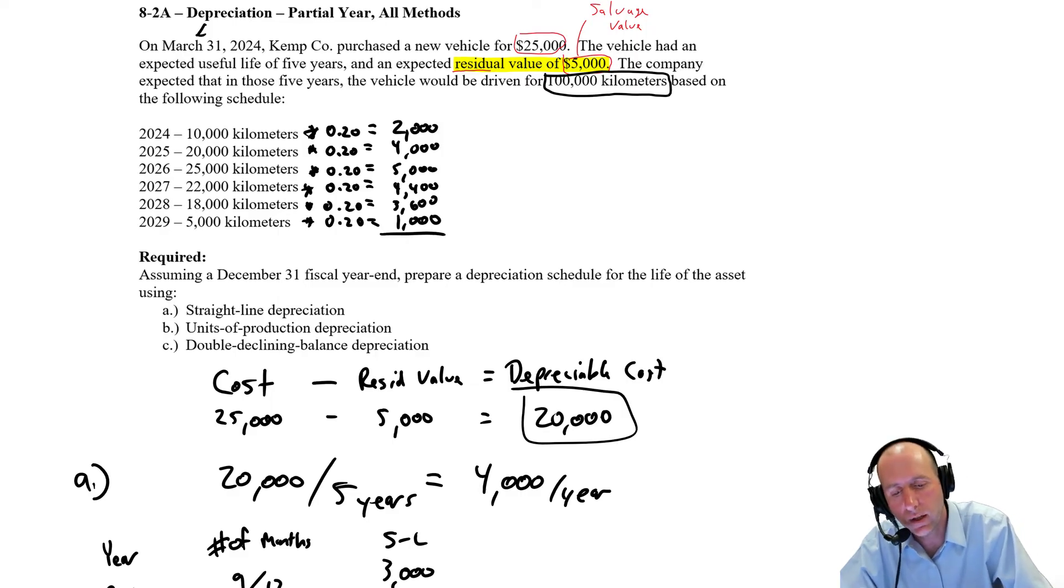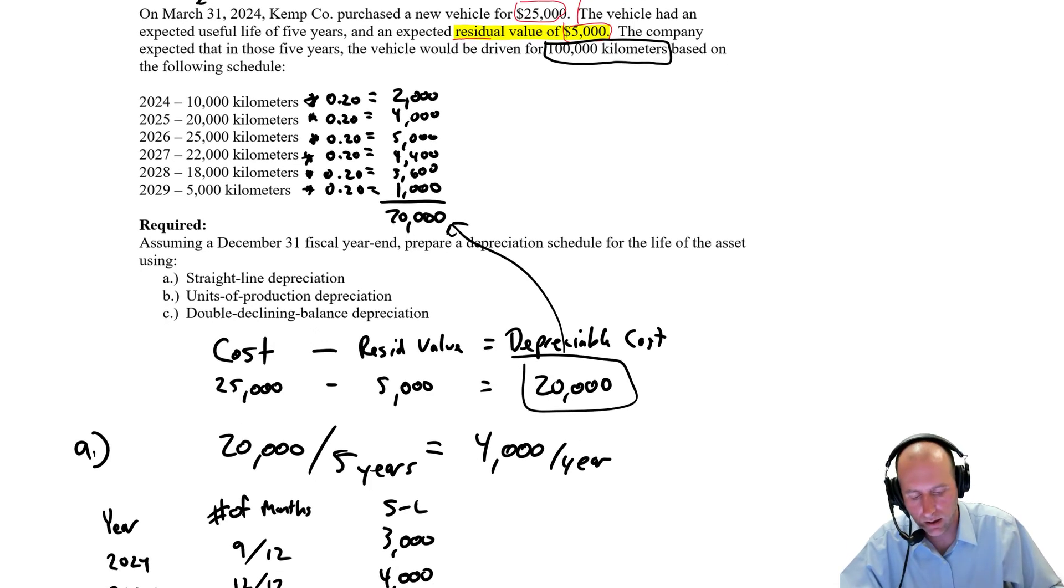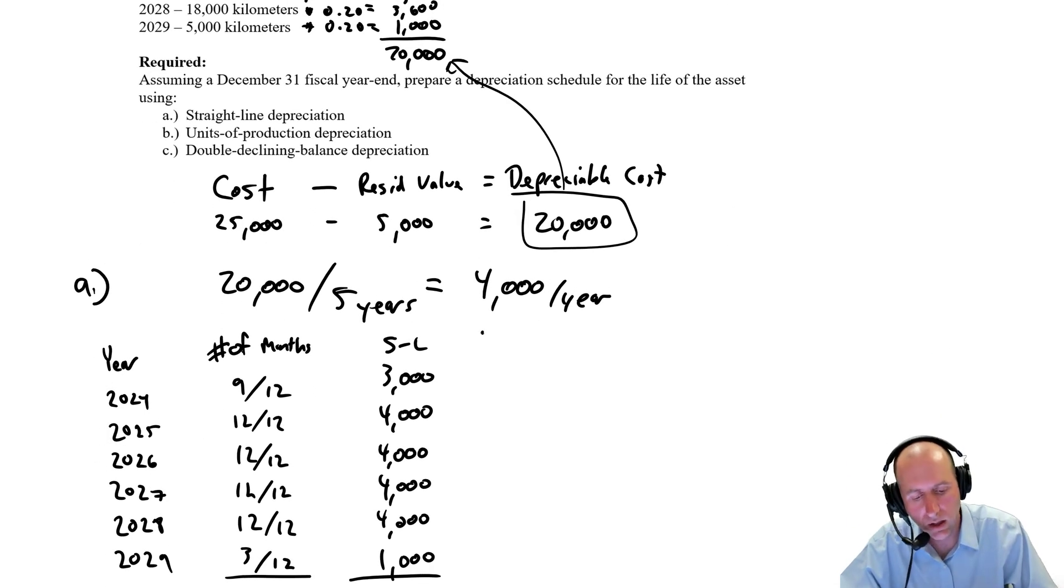The challenges of doing math in your head. 5,000 times 20 cents is $1,000. When we add this up, let's see, 6, 11, 11 plus 8 is 19. Yeah, it's $20,000. And to nobody's surprise, that is my depreciable cost.